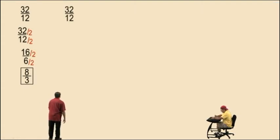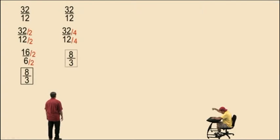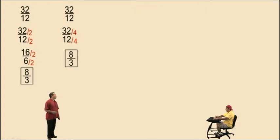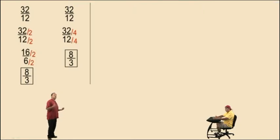Notice we divided by 2 and then again by 2 — that means we could initially divide by 4 and get the answer in one step. 32 divided by 4 is 8, 12 divided by 4 is 3. So depending on how well you know your times tables, that will determine how fast you can reduce. Sometimes the numbers pop in your head quickly, but sometimes you just go in steps, which is fine.